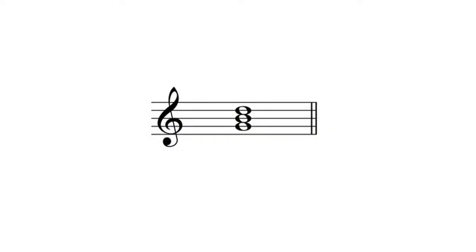A triad is one of the fundamental chordal structures in tonal music. Most chords in tonal music are either triads or extensions or alterations of triads. What is a triad?